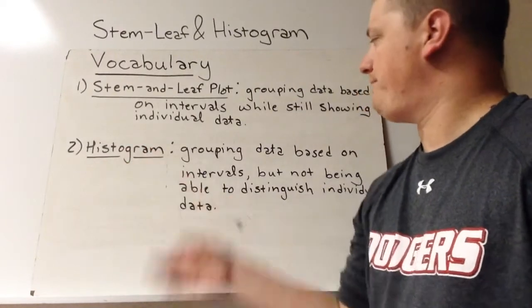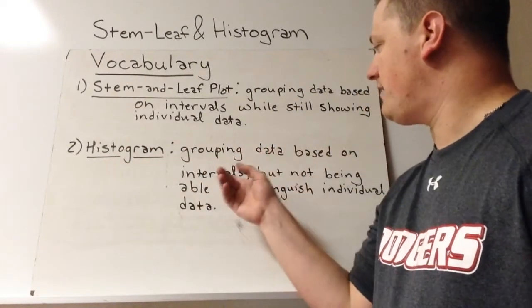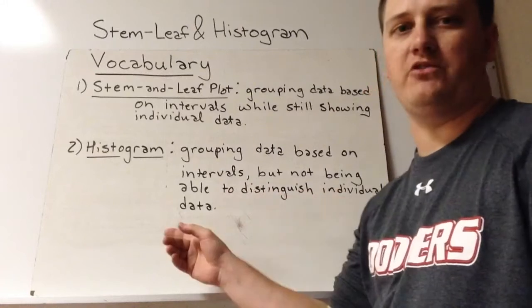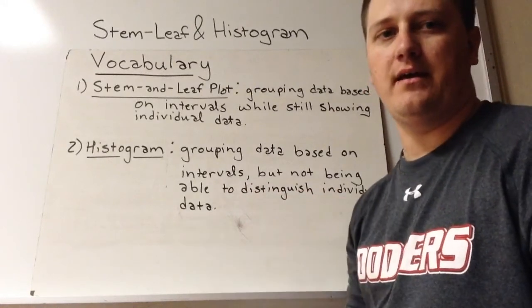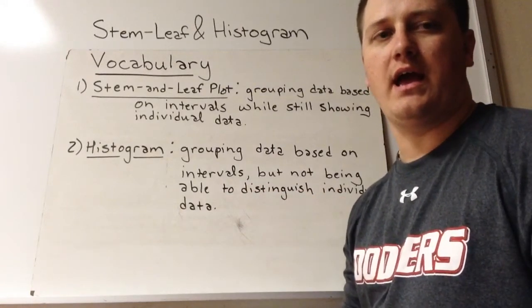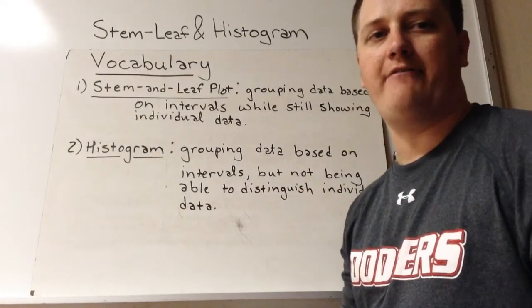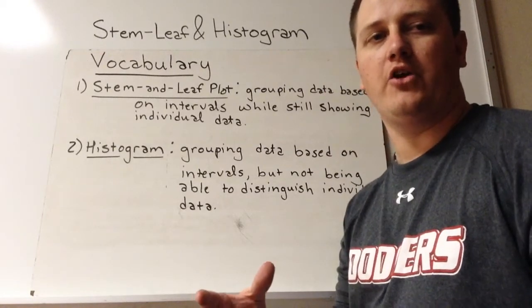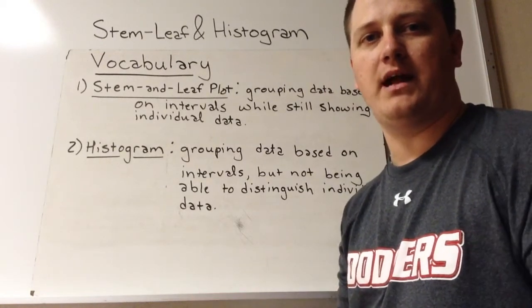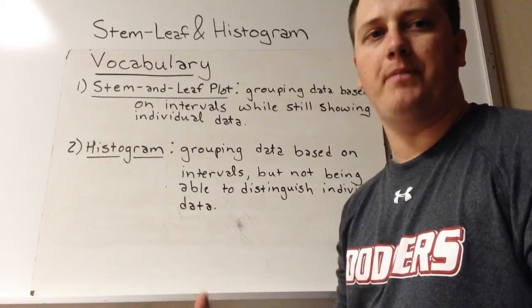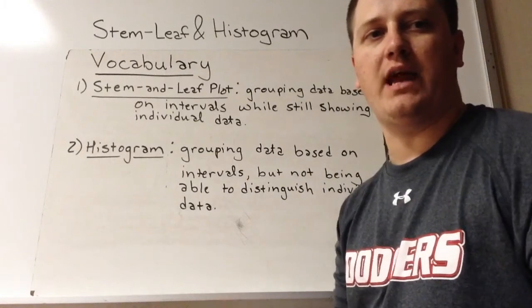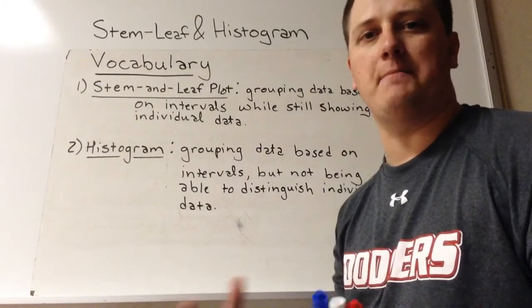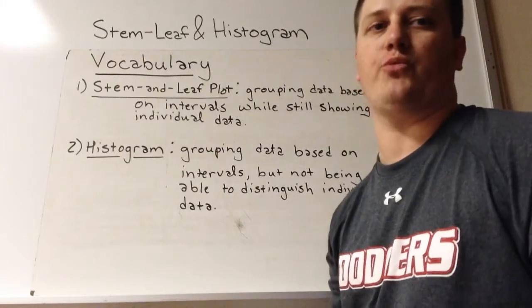Histogram: grouping data based on an interval but not being able to distinguish individual data. Basically, this is a graph that puts all the data together and groups it based off of a similarity, but because of how it's grouped, you can't tell the distinct parts that made up each group.